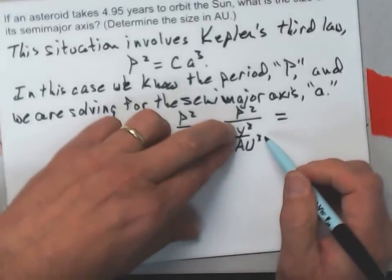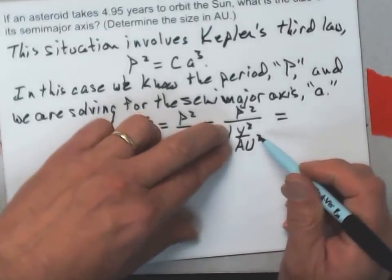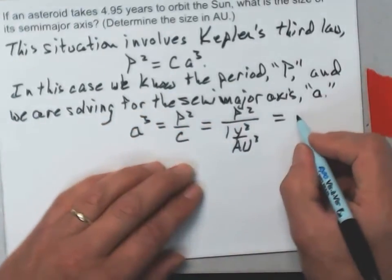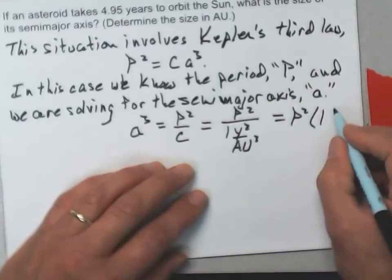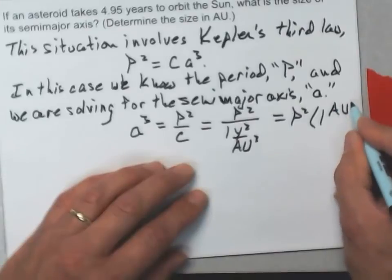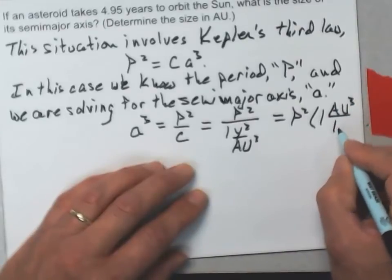P squared divided by one year squared per AU cubed, and when you divide by a fraction, you invert it and multiply, so this becomes P squared times one AU cubed per year squared.